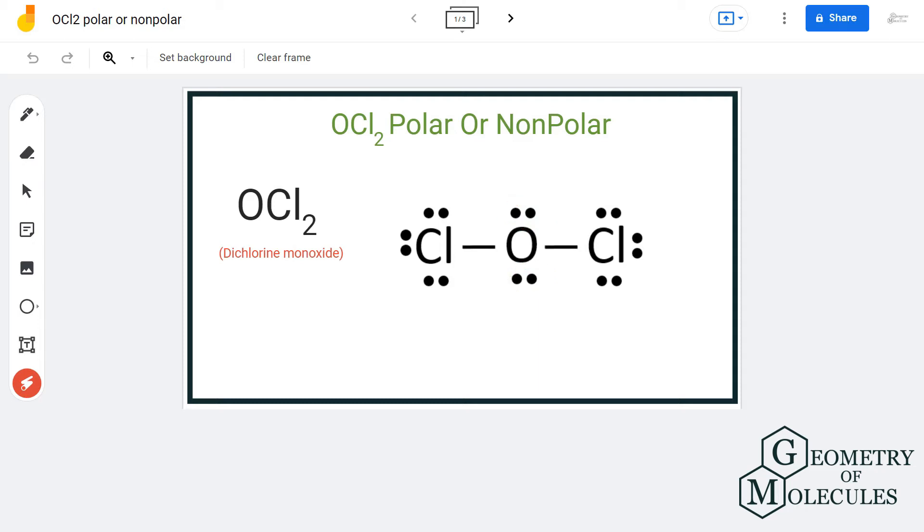Now the Lewis structure might give an idea of the arrangement of valence electrons and the atoms in the structure, but you really need to look at its 3D structure or the molecular geometry to understand the shape of the molecule.